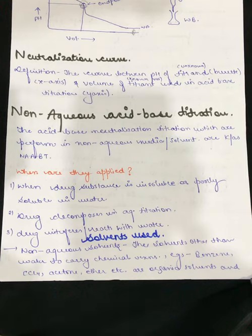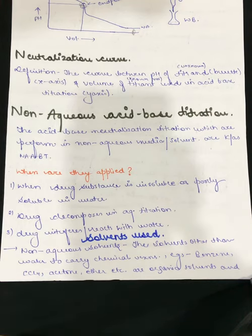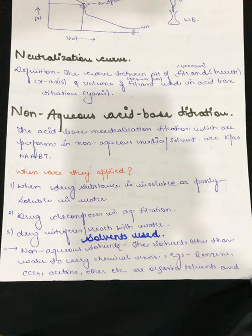Now let's look at the definition of a neutralization curve. A neutralization curve is a graph plotted between the pH of the titrate — the unknown solvent placed in the conical flask — on the y-axis, and the volume of the titrant — the known solvent placed in the burette — on the x-axis.